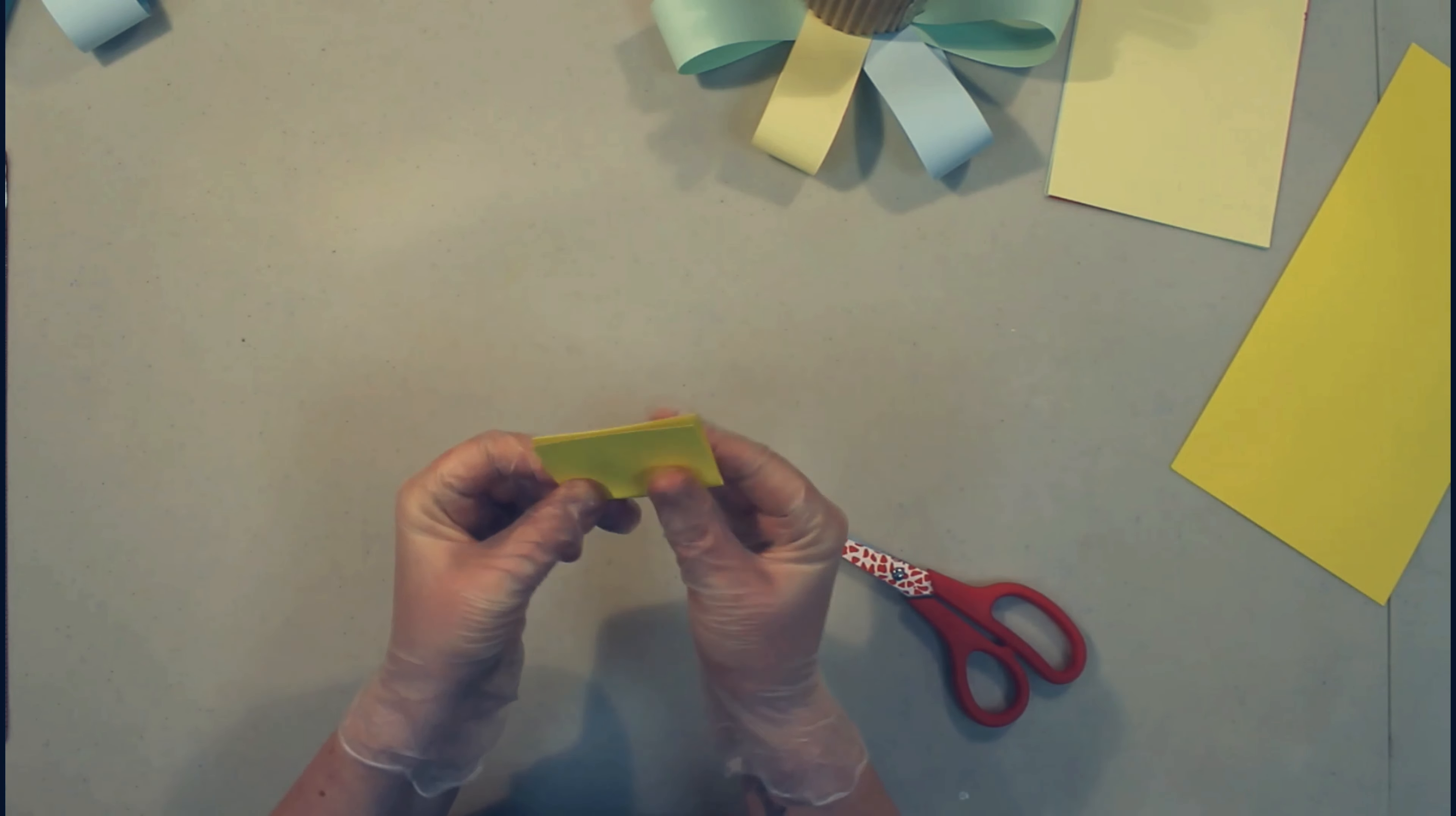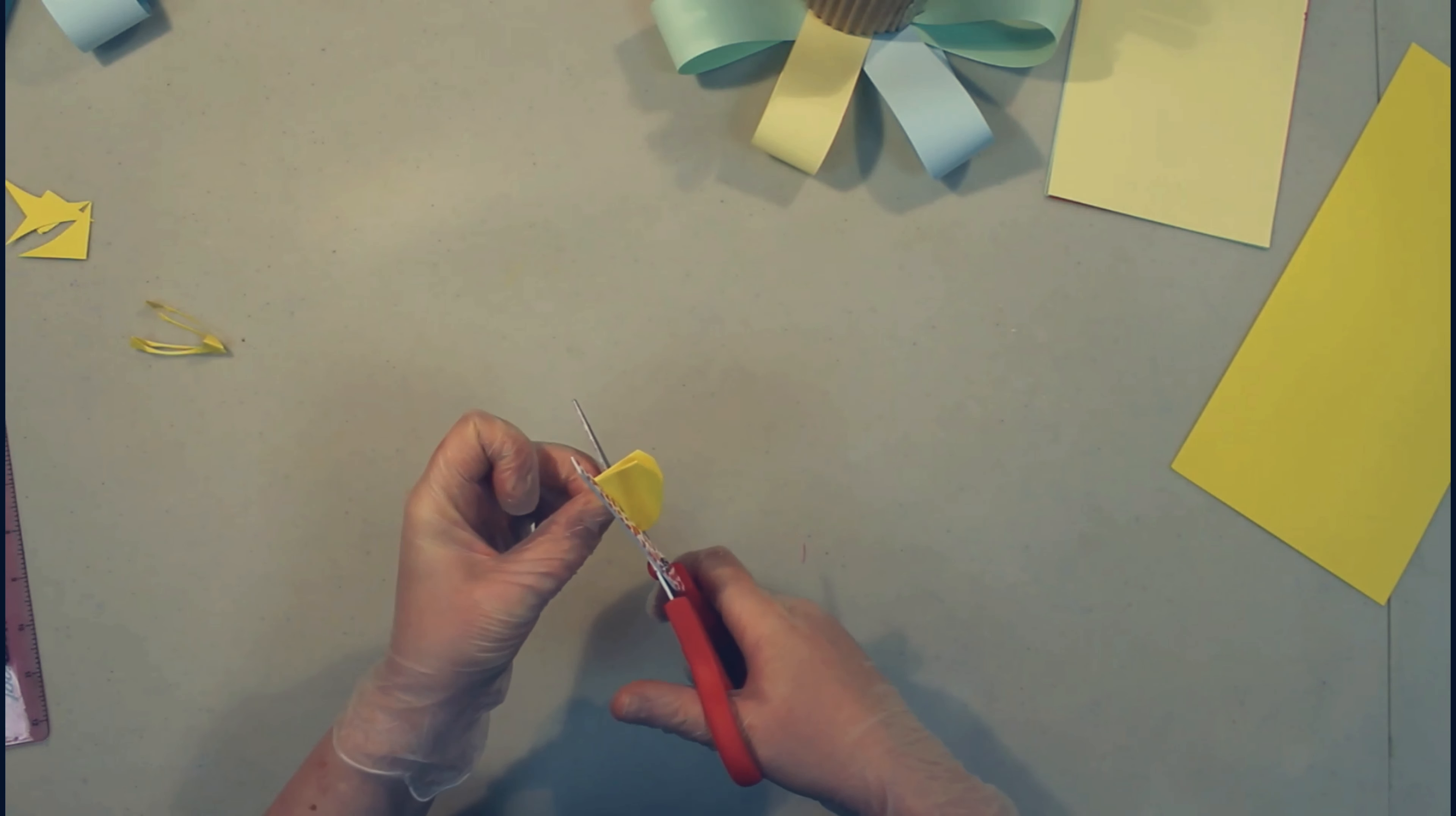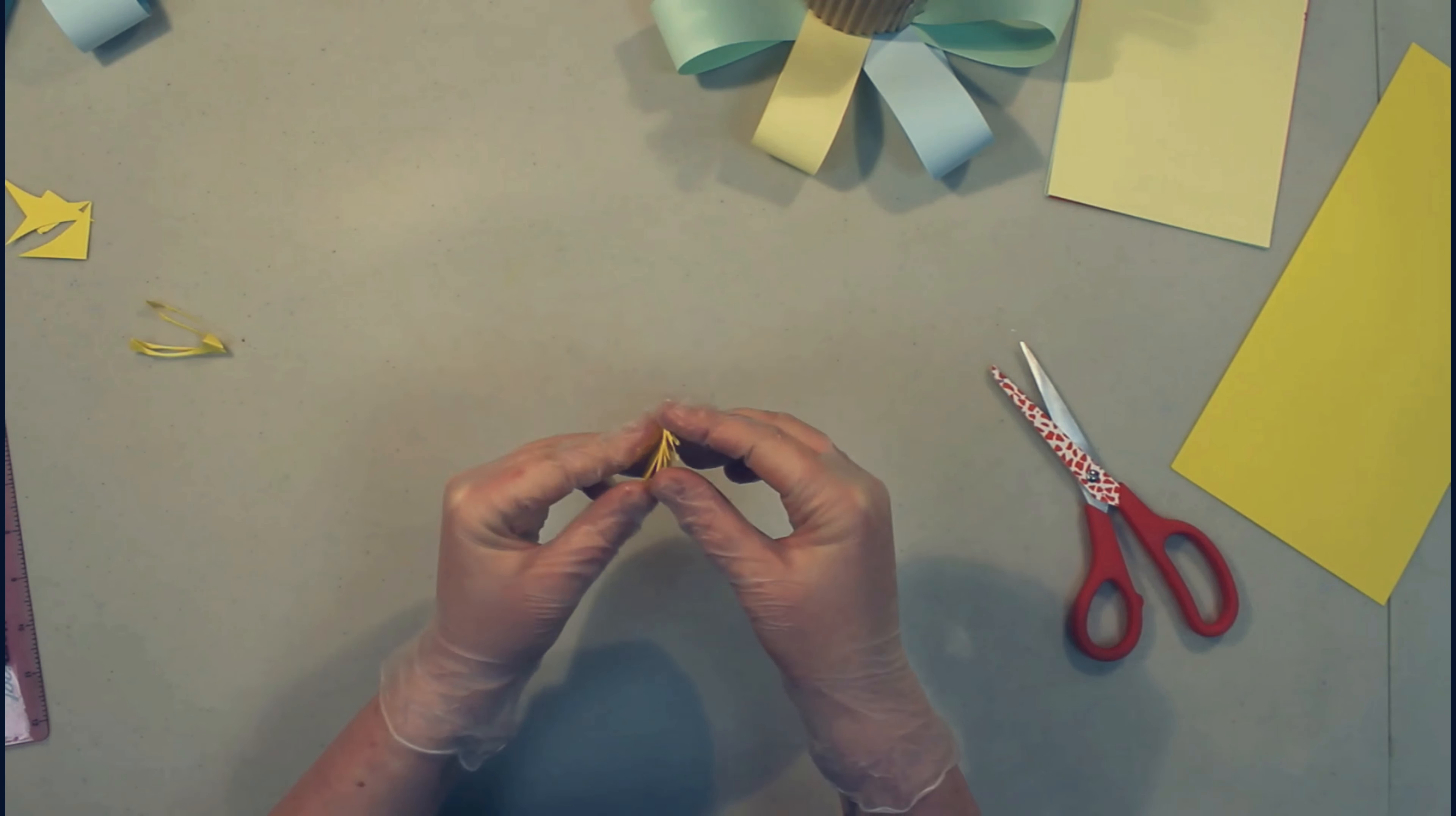Now you want to fold this once, fold it twice and then cut on a curve. Now just add some little lines in there and open it up and you've got the center of the flower.